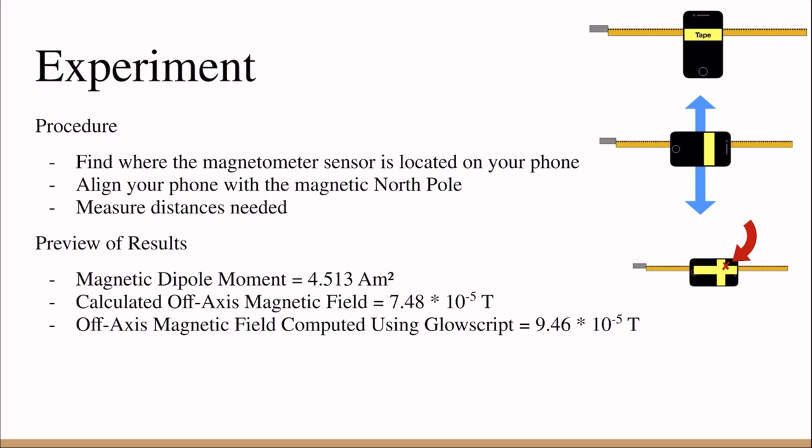Next, we need to align our phone with the magnetic north pole, and we can find where the magnetic north pole is by seeing where the x component is closest to zero on the magnetometer app.